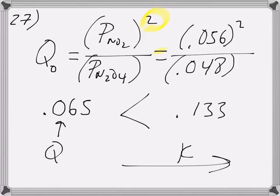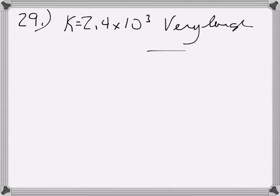Let's do a harder problem. The last one I'm going to do is number 29. If you look at number 29, you will see that K is very, very large. It's 2.4 times 10 to the third. Very large K, we know that the products are probably favored. It asked us to calculate the concentration, so we're going to go back and do that.